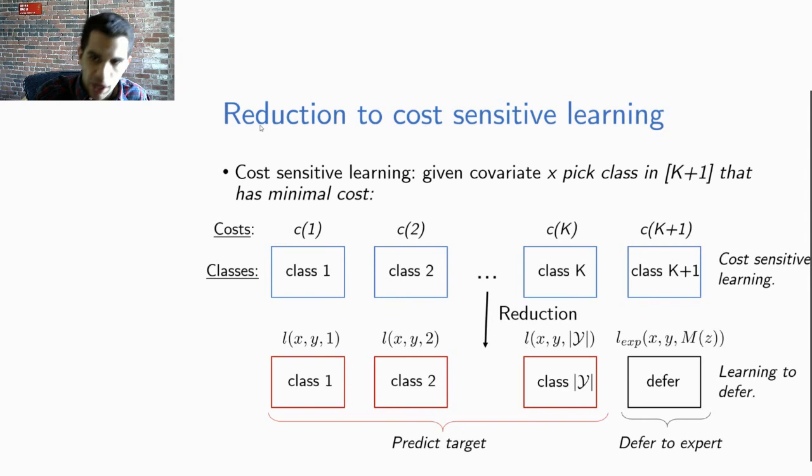And the cost for the class K plus one is now the cost of deferring to the expert, all of X, that additionally depends on the expert prediction m of Z. So this reduction means if we predict any of the first K classes it means the classifier has to predict the target and if we predict the K plus one class it means we are deferring the decision to the expert and incur the expert loss.